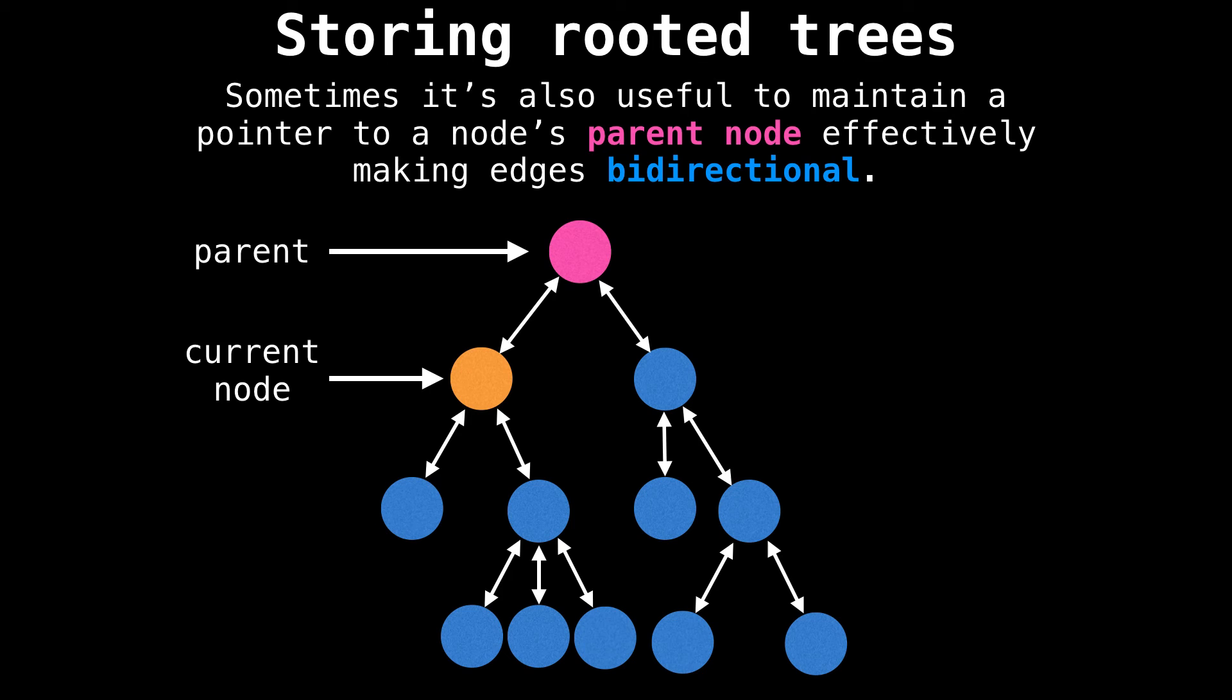It's also sometimes useful to maintain a pointer to a node's parent node in case you need to traverse up the tree. This effectively makes edges in your tree bi-directional.